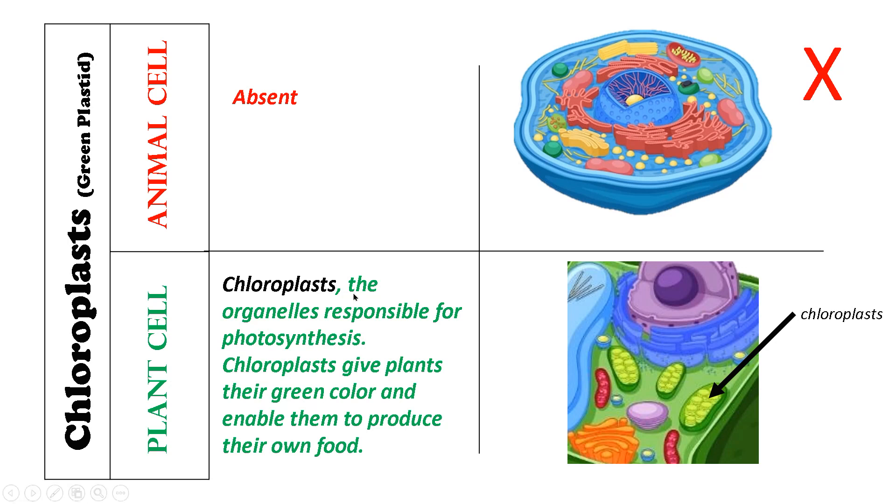Chloroplast is responsible for photosynthesis and gives green color to the green parts of the plant.